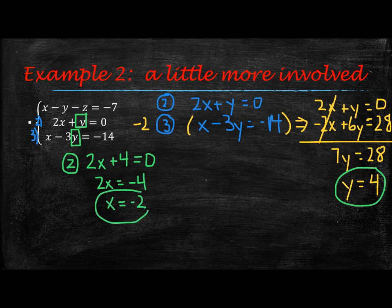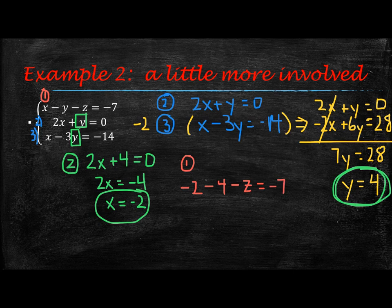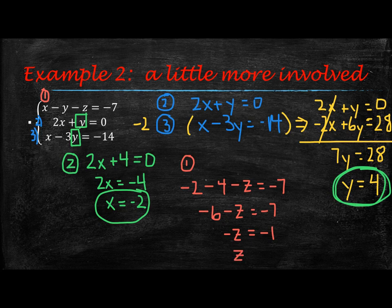So now I'm going to take my x equals negative 2 and my y equals 4, and plug them into equation 1 to solve for z. Equation 1 says x, so I put negative 2 in place of x, then minus my y which is 4, then minus z equals negative 7. Negative 2 minus 4 is negative 6, minus z equals negative 7. Add 6 to both sides, so you'll have negative z equals negative 1, and dividing by negative 1 gives z is equal to 1. So there are my three variables.